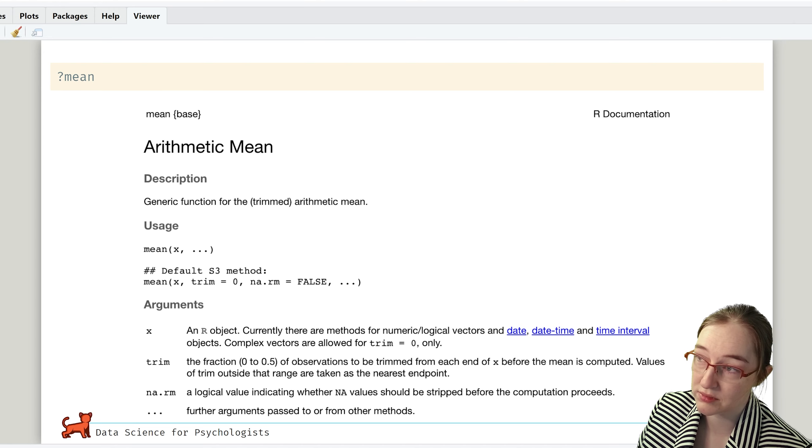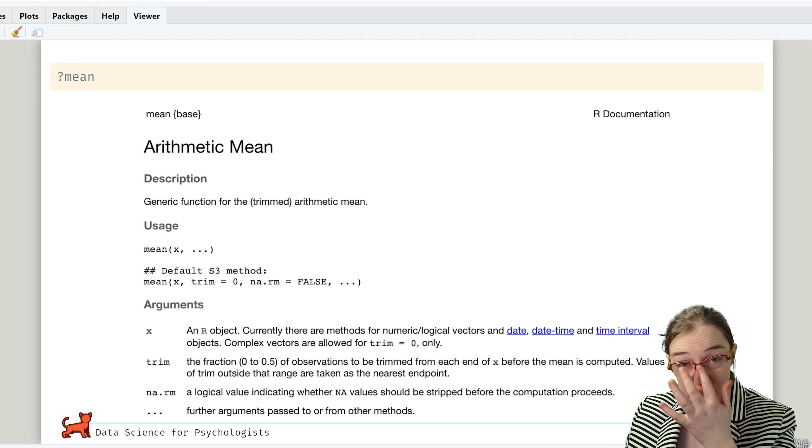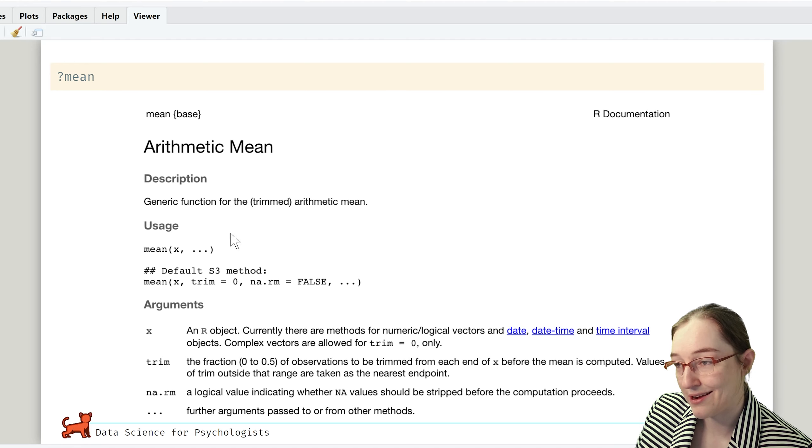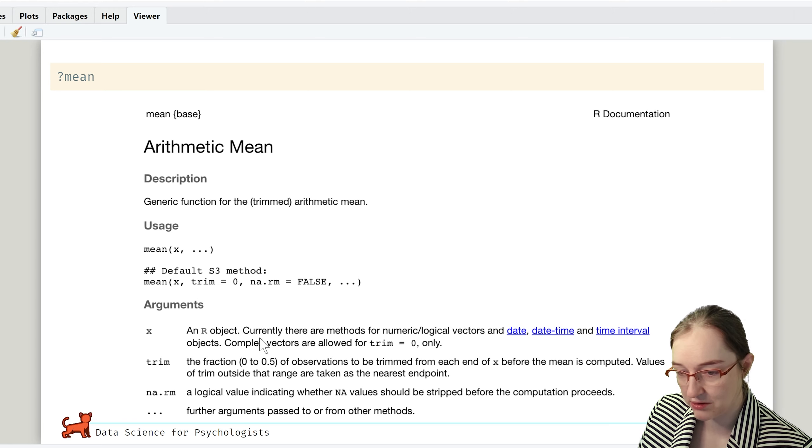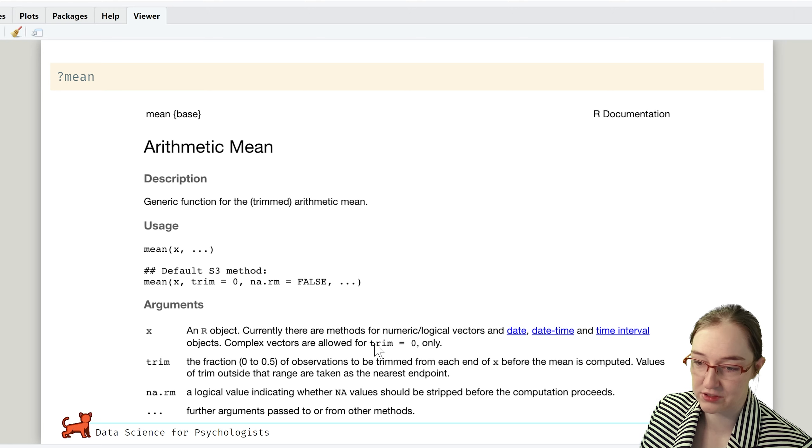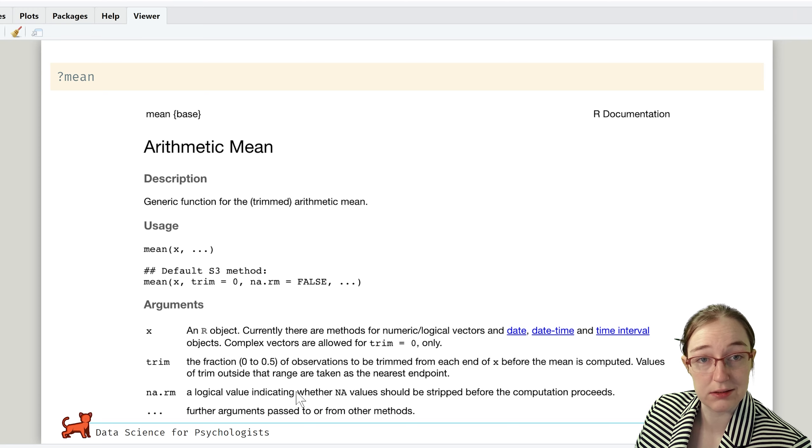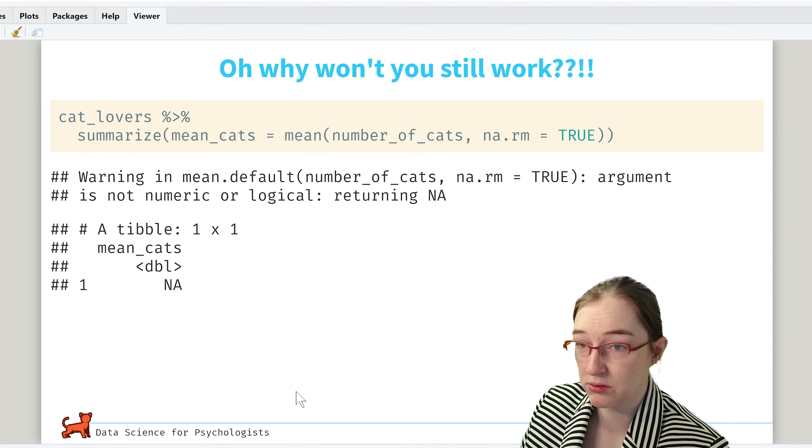So let's go look at the mean and see what is up. As we look through, you can just press question mark mean, and it'll summon the documentation. The arithmetic mean is a generic function for the trim arithmetic mean. And usage, it needs an x, and the default is na.rm is false and trim is zero.